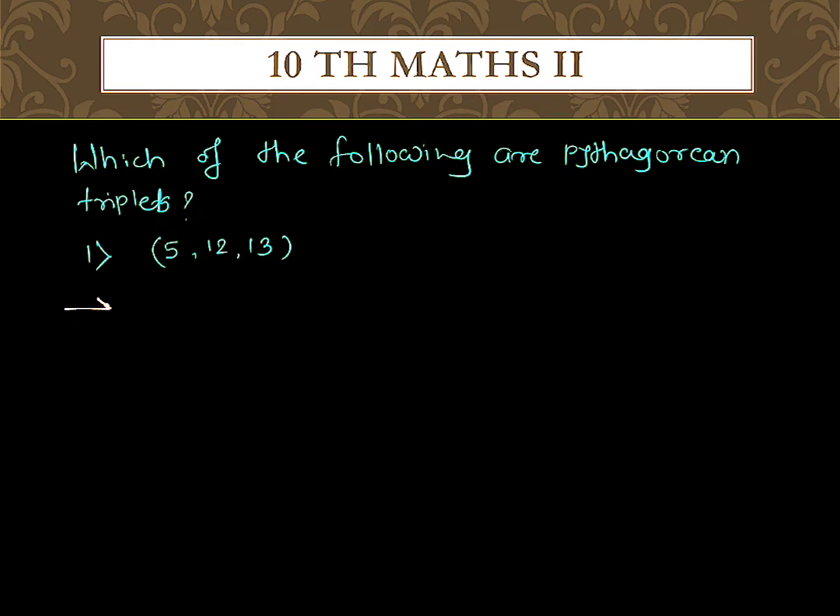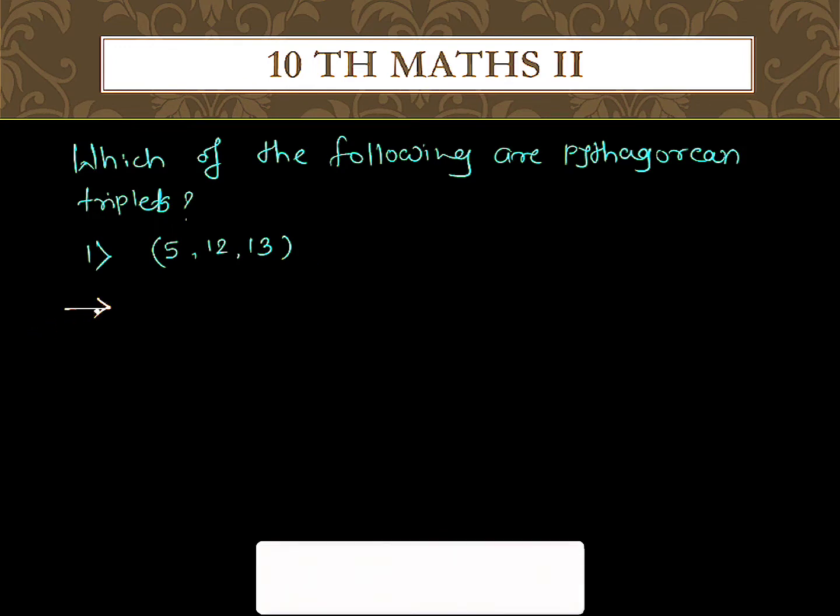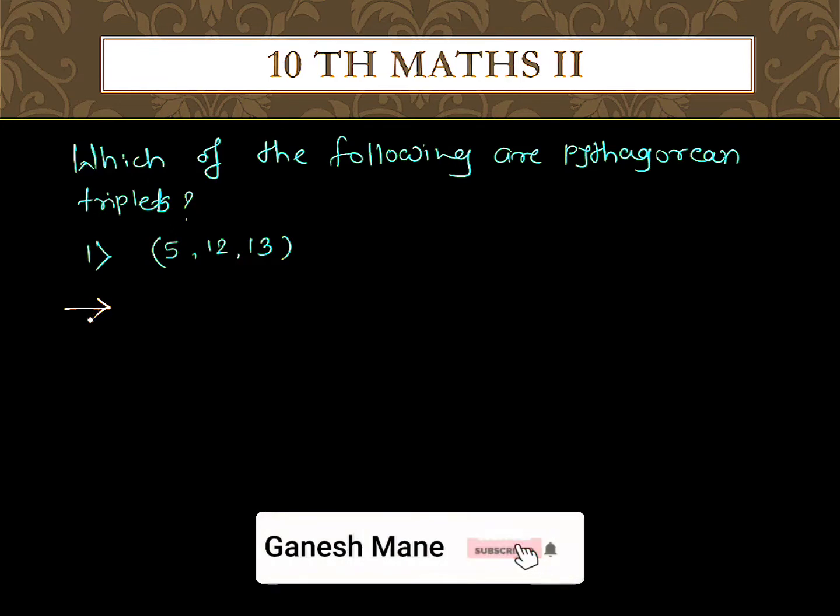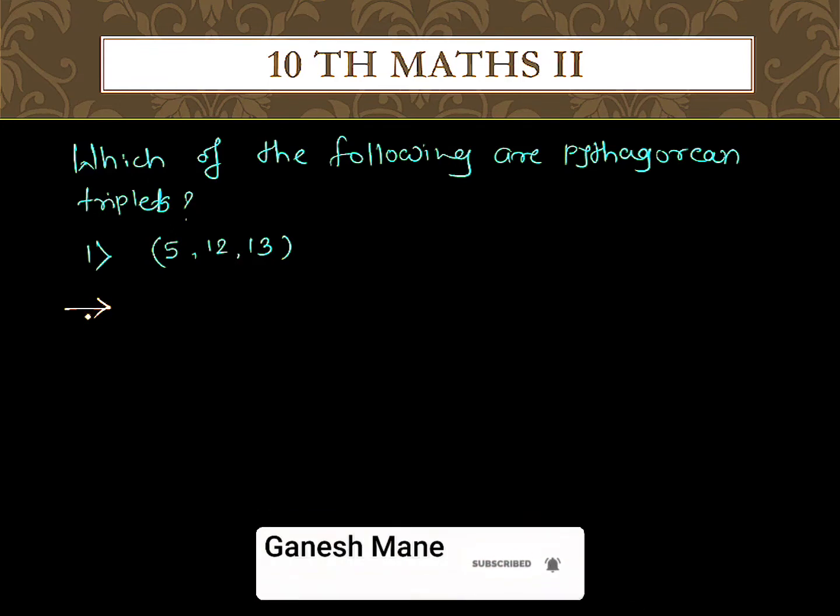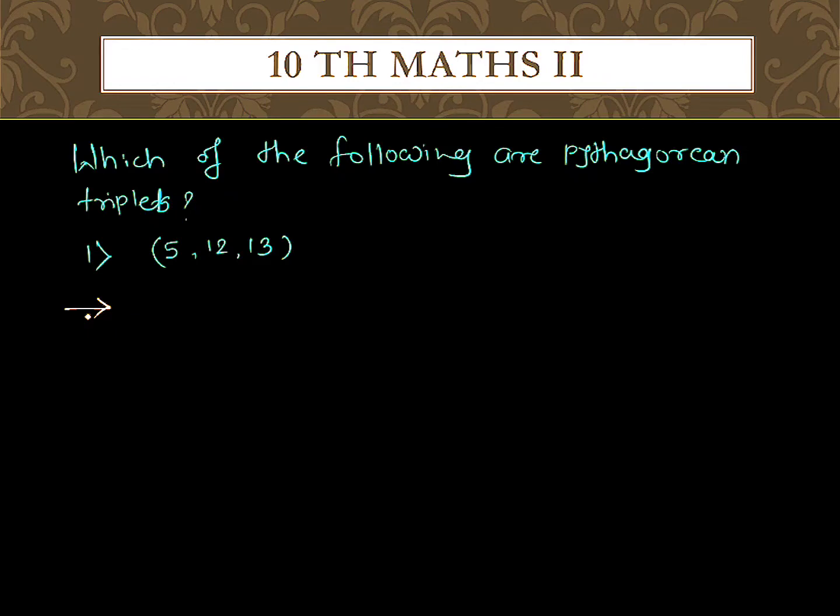So to be a Pythagorean triplet, if three numbers are given and we make a square of the largest number, and if it is equal to the sum of squares of the remaining two numbers, then it would be a Pythagorean triplet.